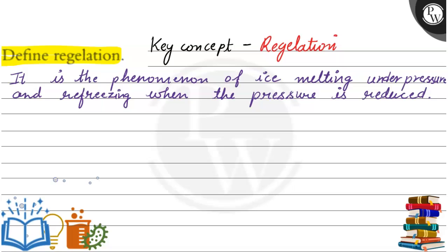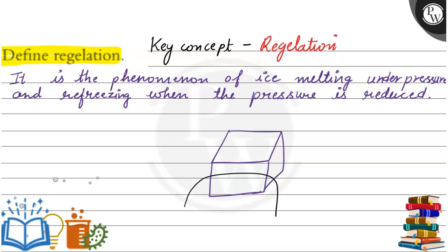In this case we have an example of an ice block with a fine copper wire attached with some weight. Through the weight, we will see that the wire will cut through the ice and go down.